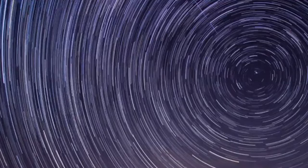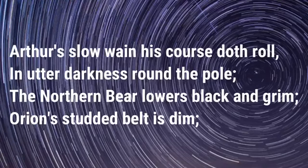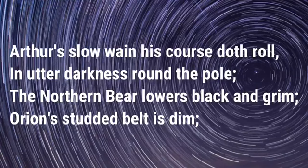In his 1805 work Lay of the Last Minstrel, Scott states: 'Arthur's slow wane his course doth roll in utter darkness round the pole. The northern bear lowers black and grim, Orion's studded belt is dim.'